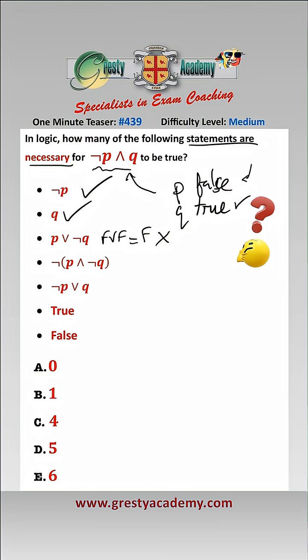For the fourth one, if not P and Q is true, then not P and not Q is true and false, which equals true, so this one is necessary.